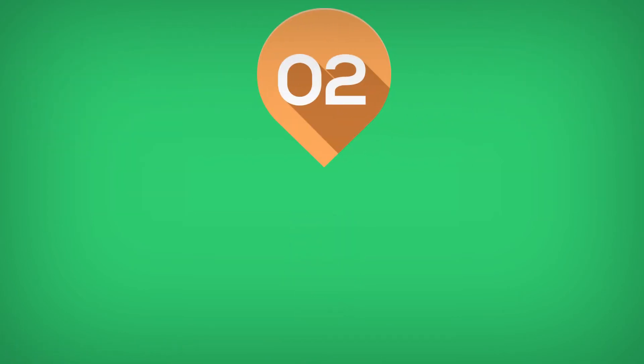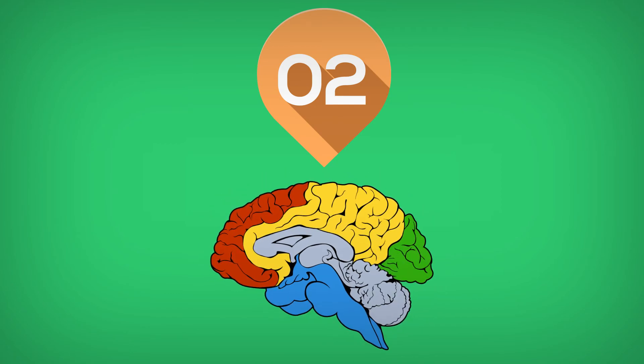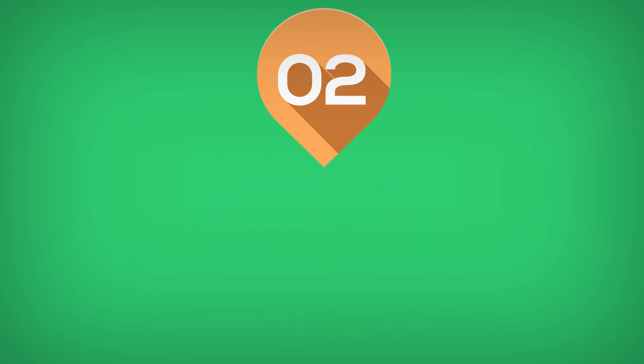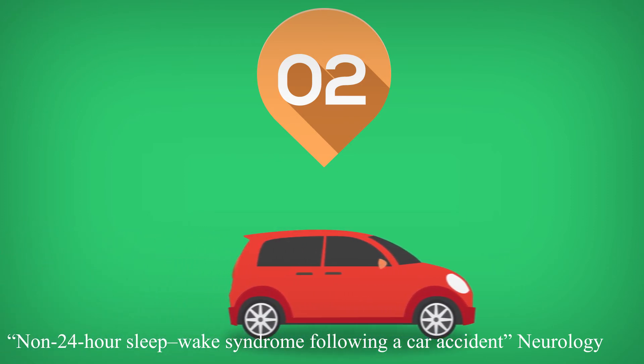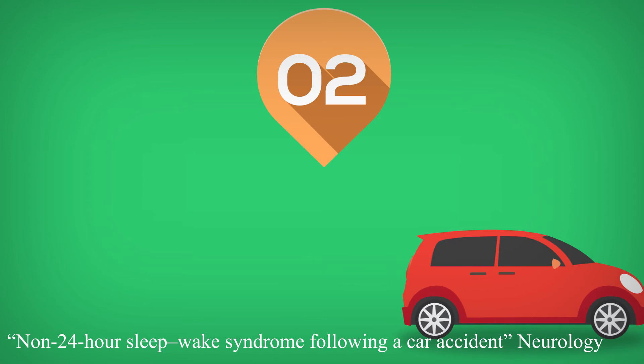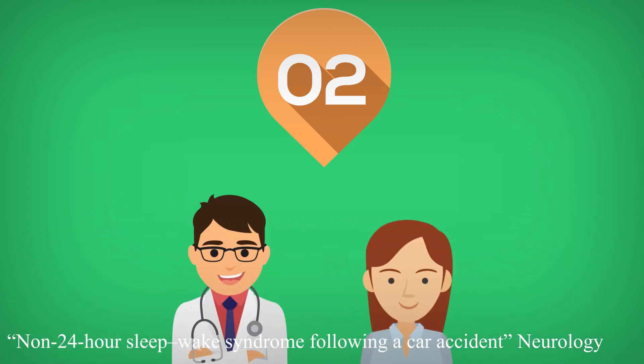Secondly, a malfunction of the suprachiasmatic nucleus, the part of the hypothalamus responsible for controlling the circadian rhythm, can result in this disease. For instance, there's a reported case of a sighted woman who developed a non-24-hour sleep-wake disorder after a hand injury in an accident. A laboratory investigation proved that she was sensitive to bright light, usually responsible for the circadian rhythm synchronization.